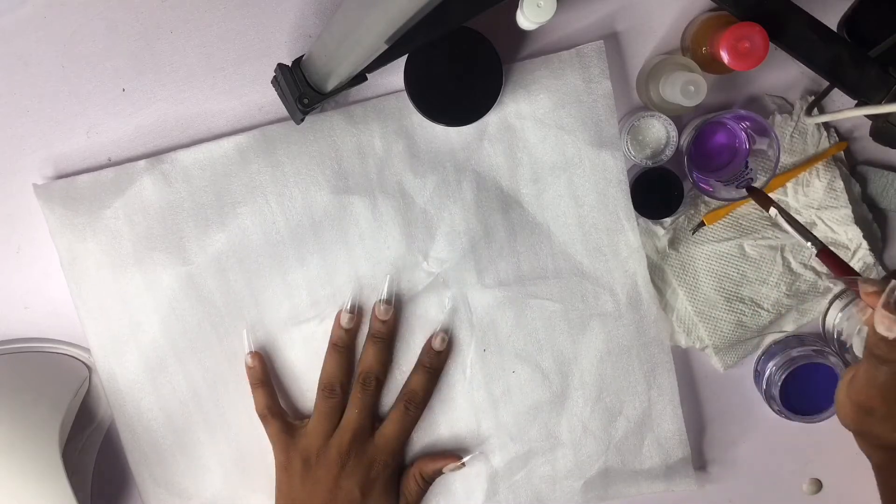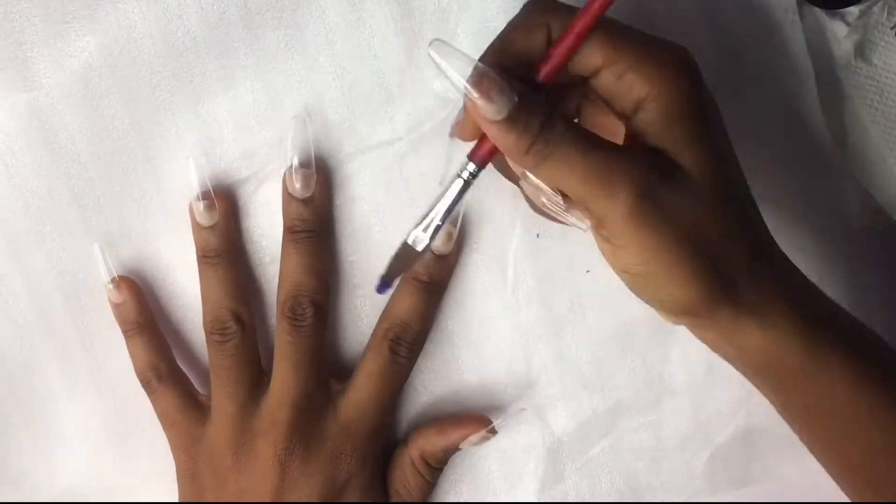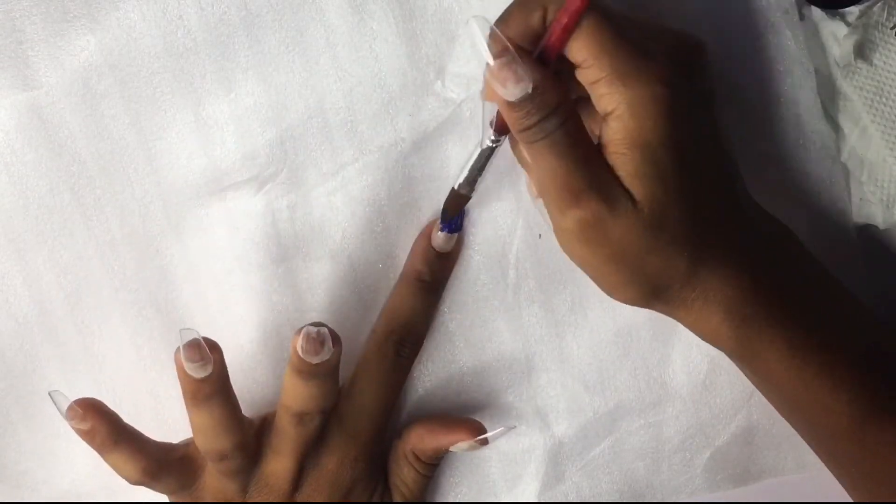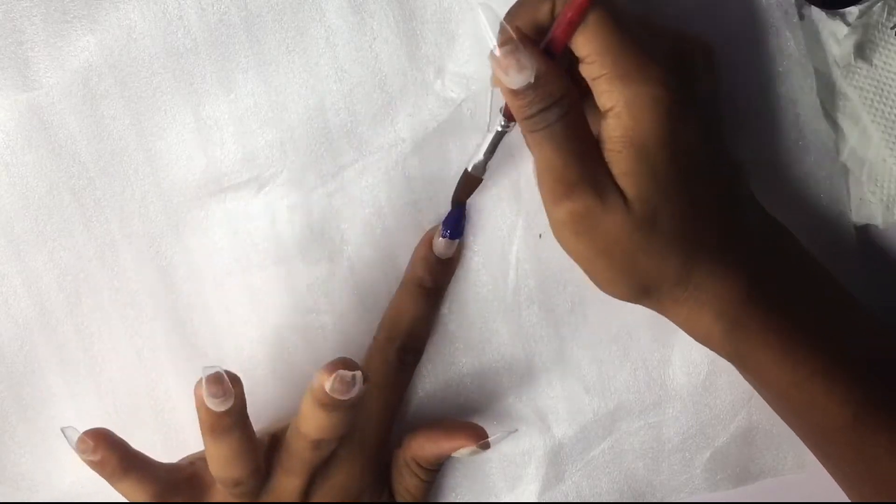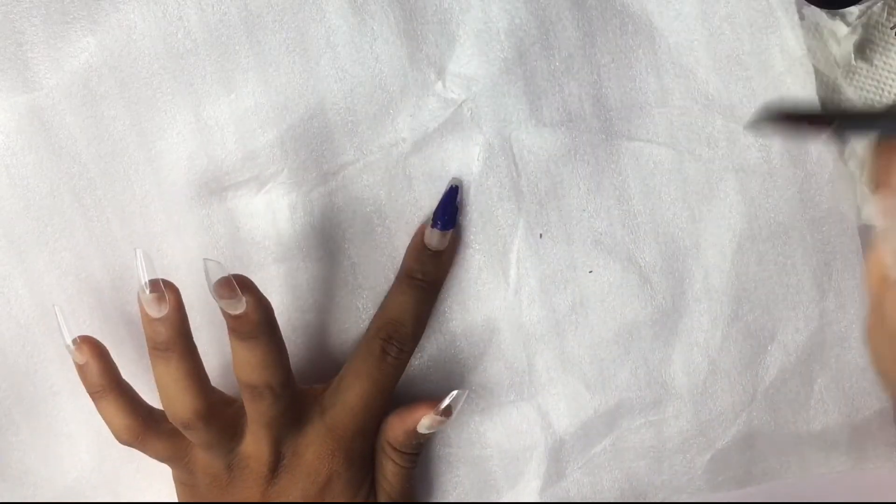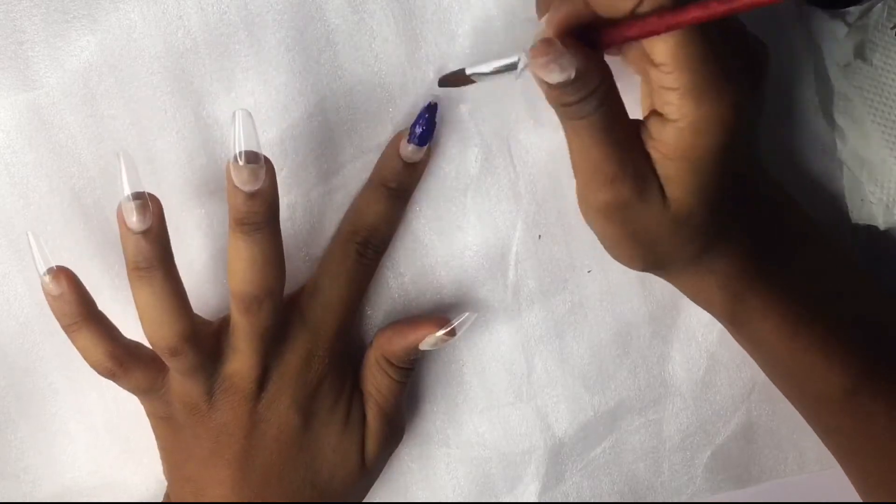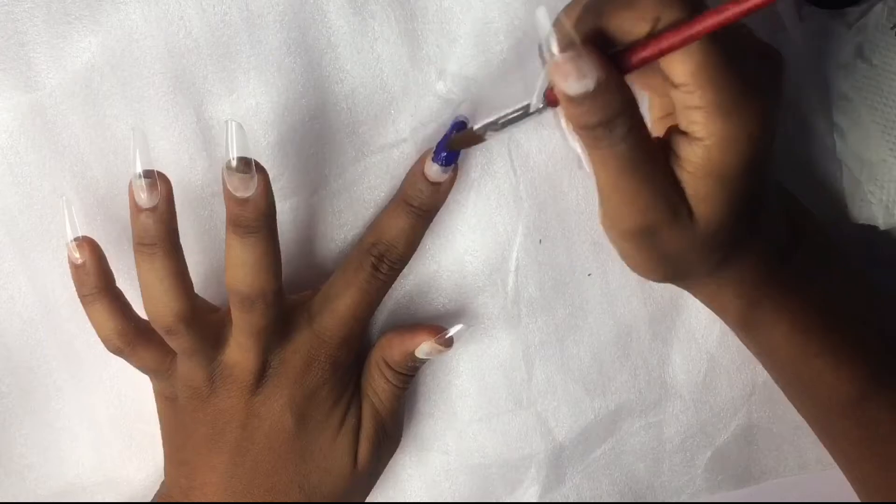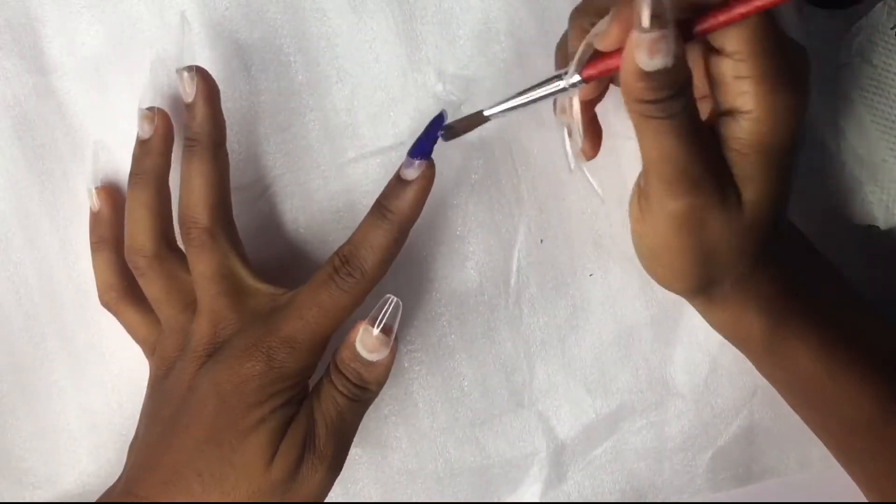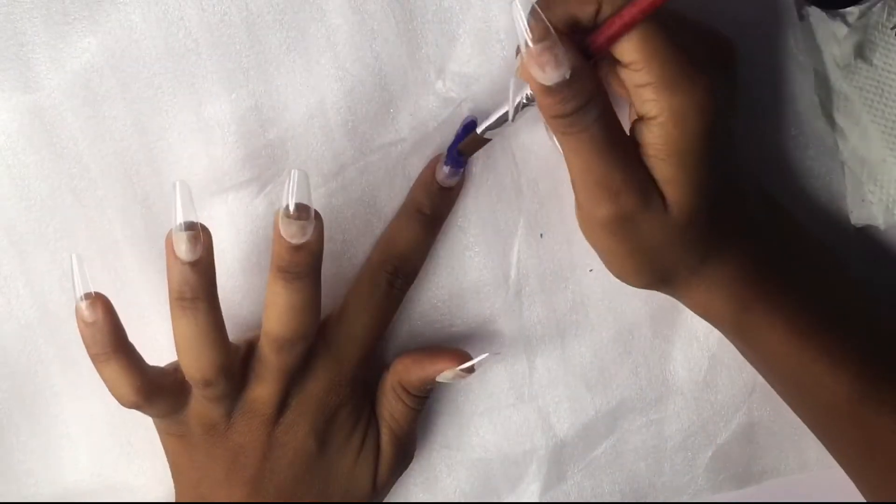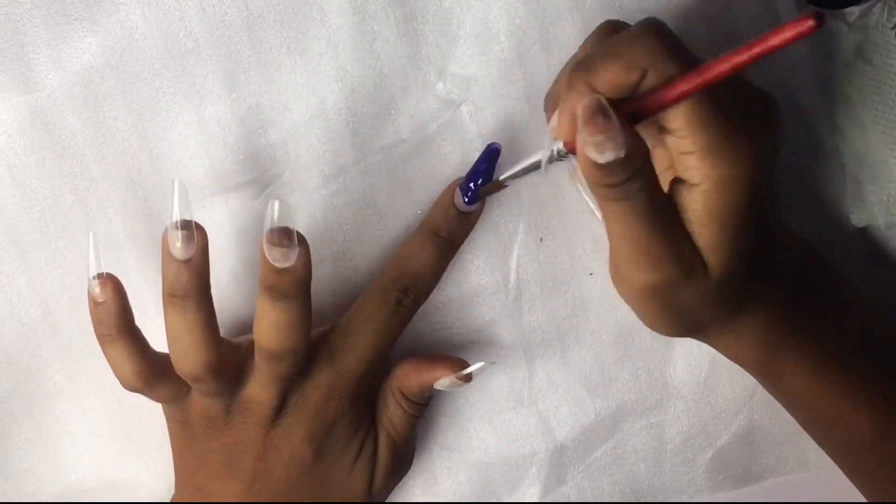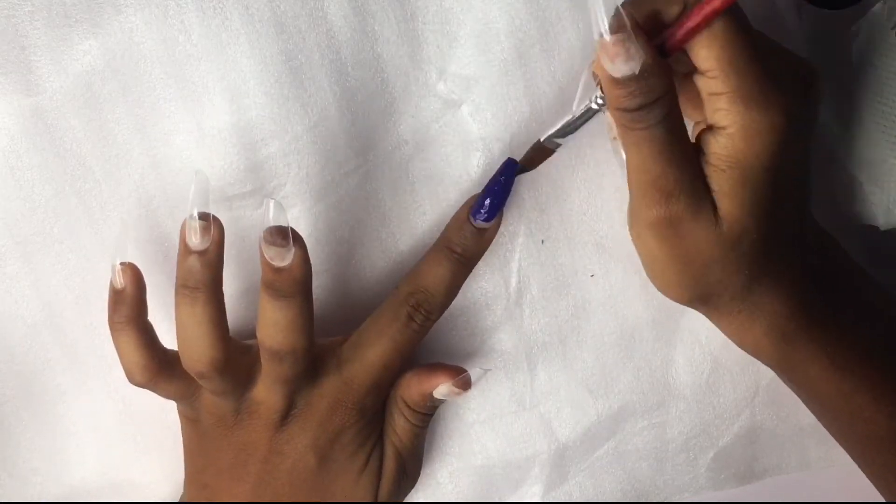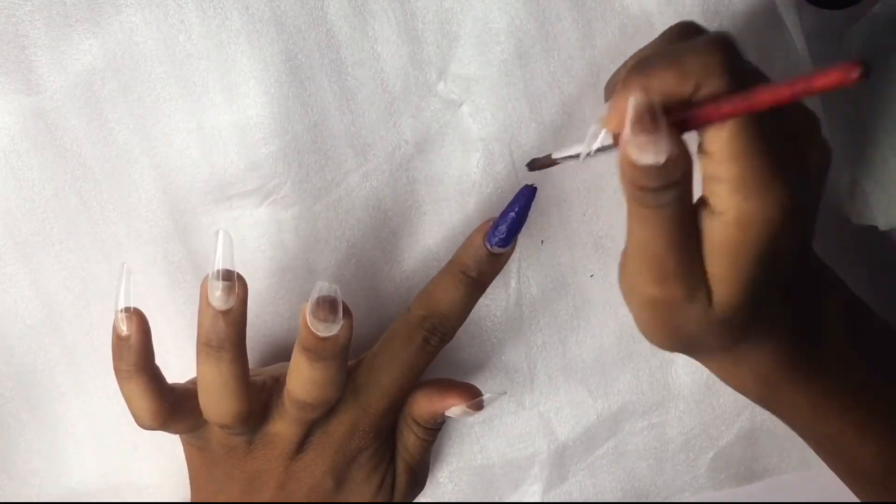You just dip your brush in the monomer and rub it on the tip of the cup to reduce the excess amount of monomer. Then dip it in your acrylic powder. Then you put it on your nail tip. You don't put it at the beginning of the tip of your nail, you put it almost midway. That way you can give that fuller effect at the crown of your nail. I don't know if that makes sense, but just watch what I'm doing.